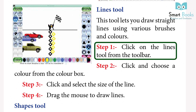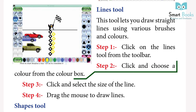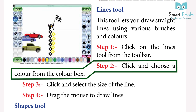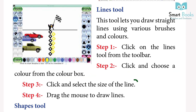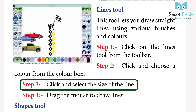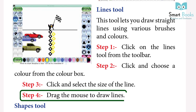Using the Lines Tool — Step 1: Click on the Lines Tool from the Toolbar. Step 2: Click and choose a color from the color box. Step 3: Click and select the size of the line. Step 4: Grab the mouse to draw lines.